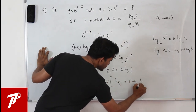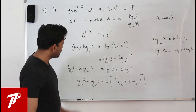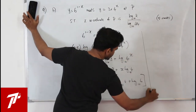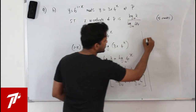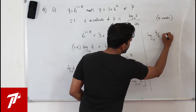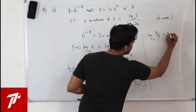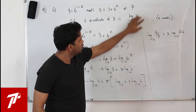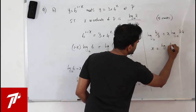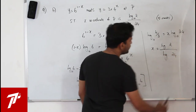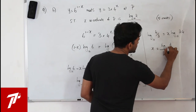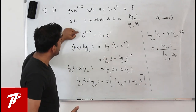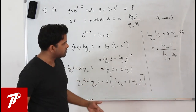Collect x terms on one side: log 6 minus log 3 = x log 4 + x log 6 = x(log 4 + log 6). Now log 6 minus log 3 = log(6/3) = log 2, and log 4 + log 6 = log 24. So x = log 2 / log 24, base 10.